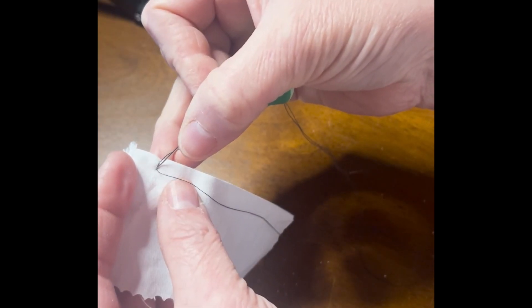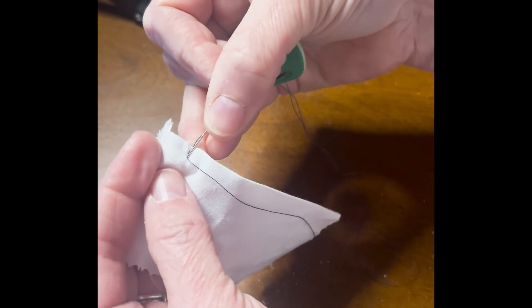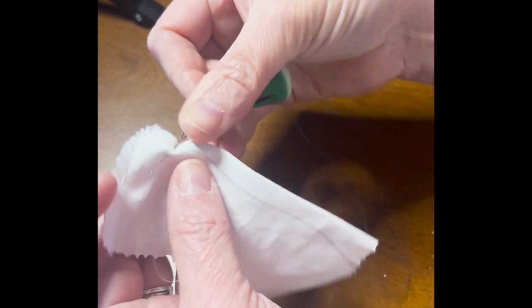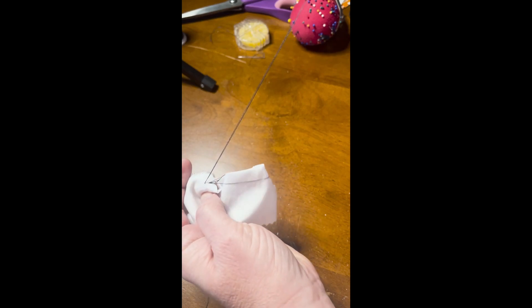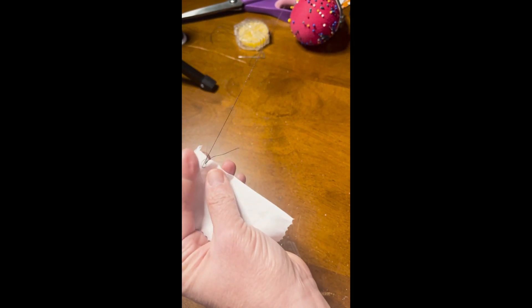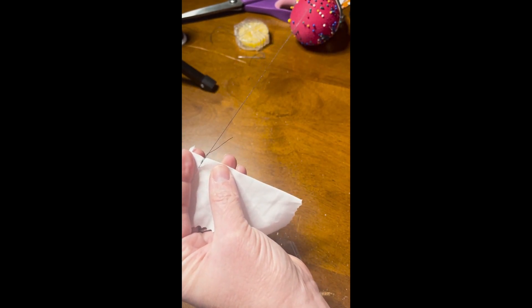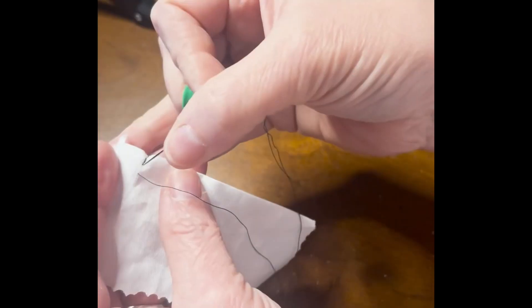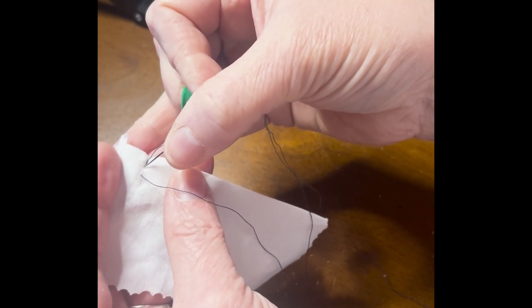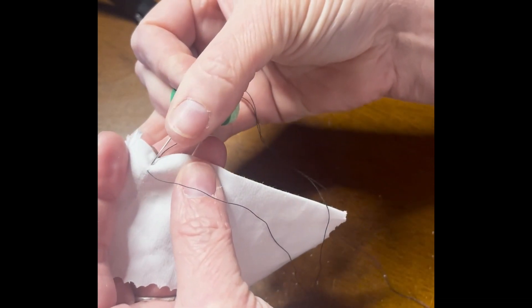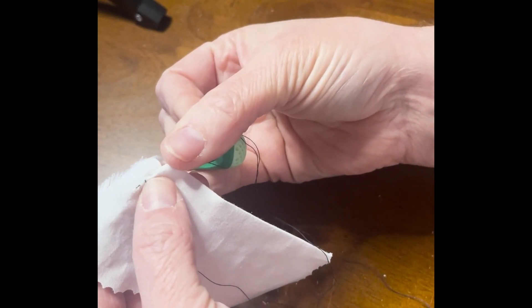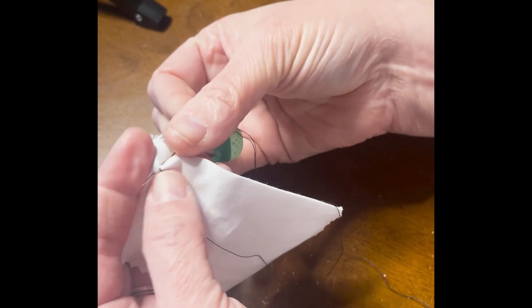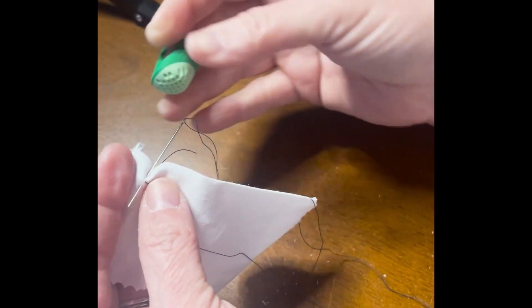So then you're going to start your stitch right next to where your knot is and you are going to again take up about a quarter of an inch. And then you're going to go right back where your thread is, and then when you poke the needle out you're going to poke it just a little bit past your thread where it's popping out here.